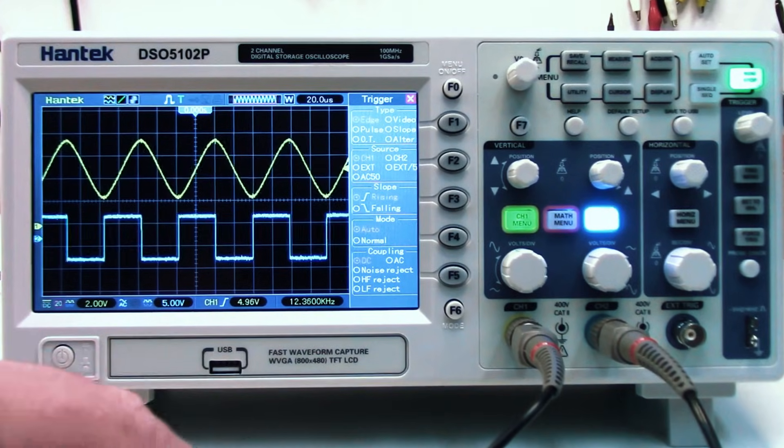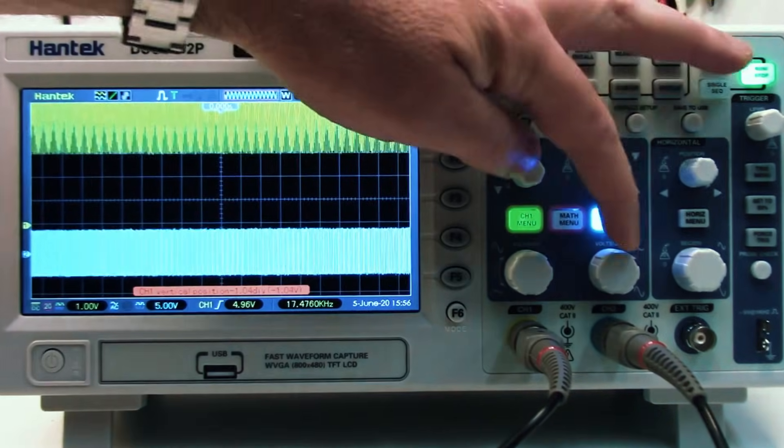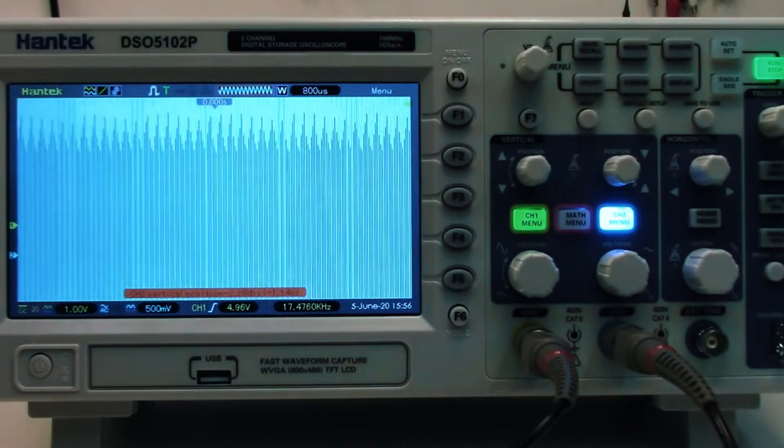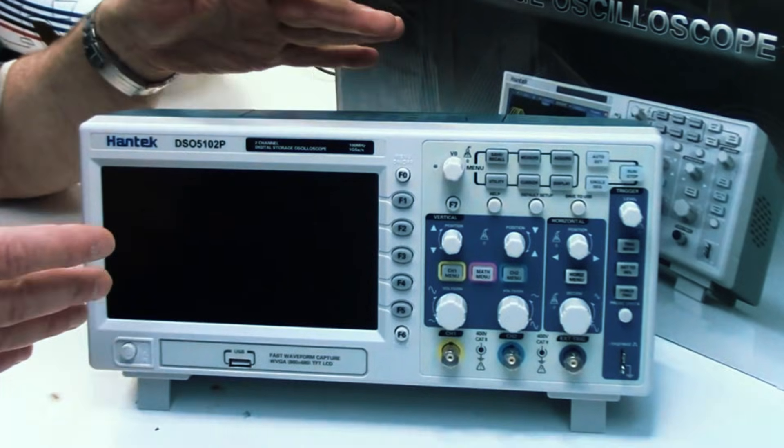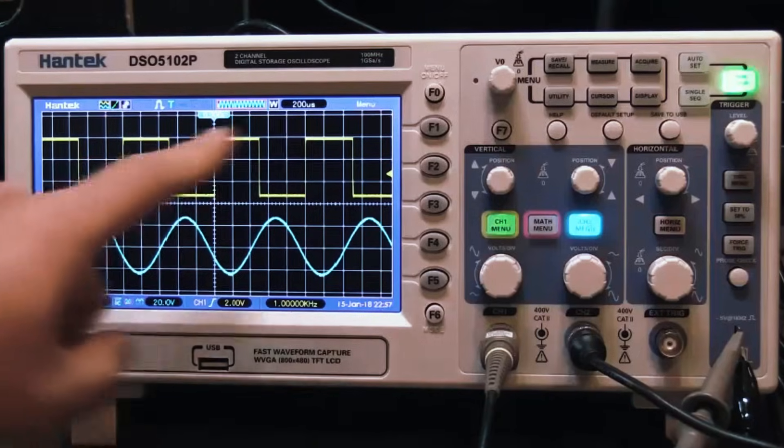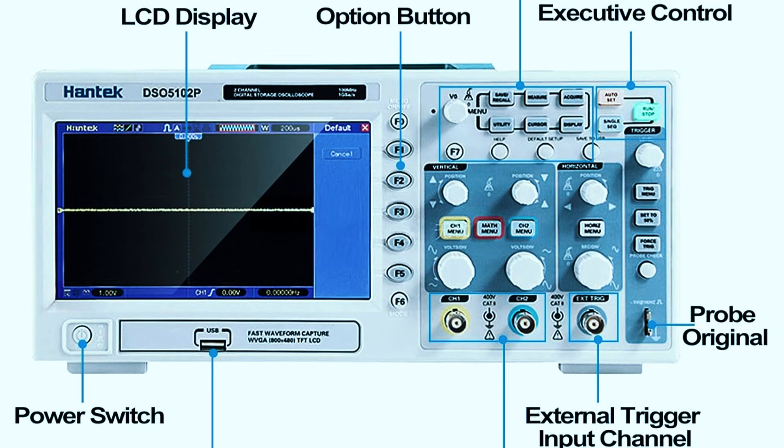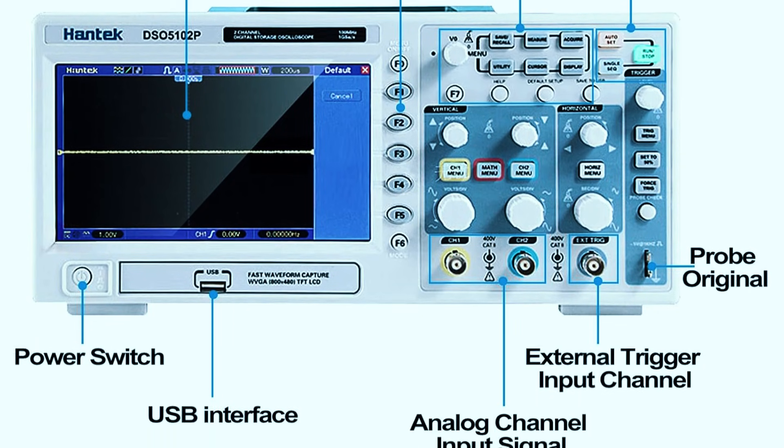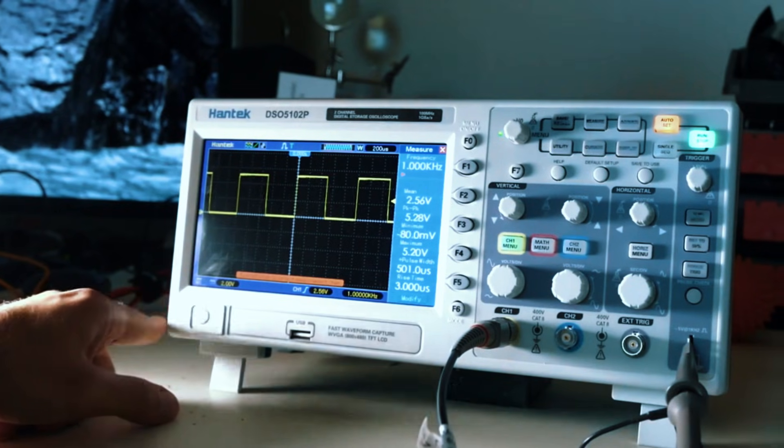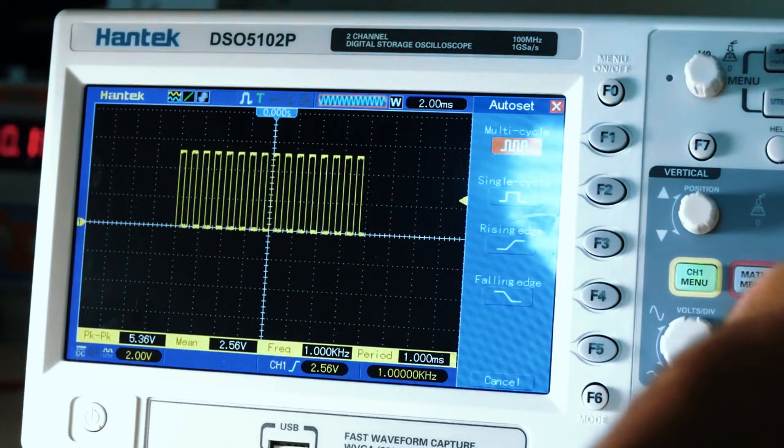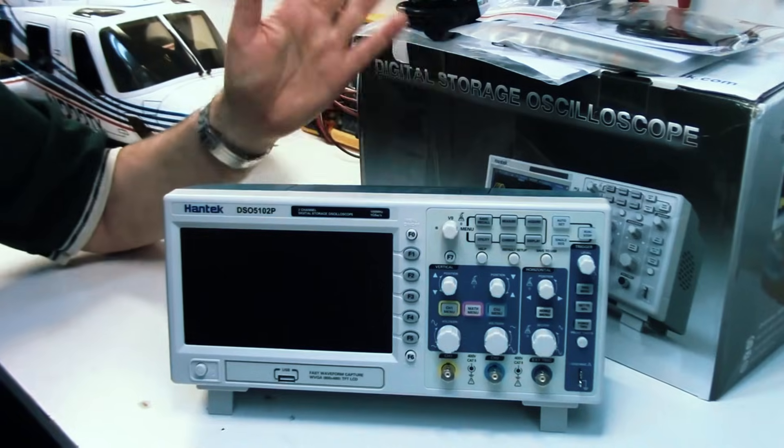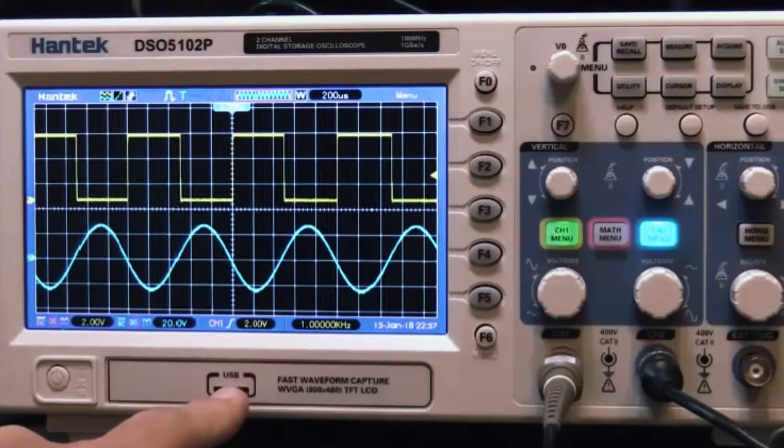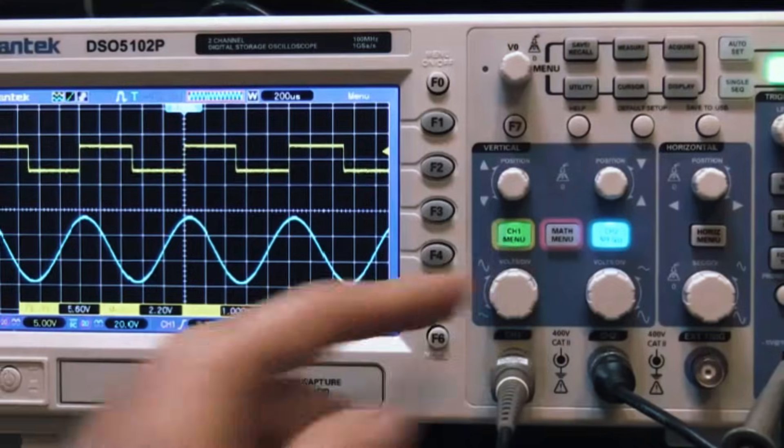The multiple trigger modes enhance signal capture precision, ensuring you don't miss critical waveform events. While it may not have the fastest waveform update rate compared to high-end models, it still offers a decent capture rate, making it reliable for most standard applications. With deep memory storage and fast processing, the Hantec DSO5102P enables accurate signal analysis without significant lag. The USB connectivity is a great addition as it allows users to store and export waveform data for deeper analysis, especially useful for students or professionals needing detailed documentation. While it may not be the absolute fastest oscilloscope in its class, it outperforms most budget models in signal clarity and usability. The interface is user-friendly and the overall build quality feels solid.